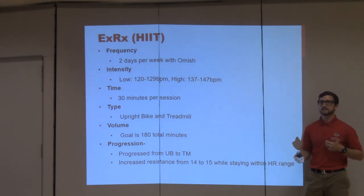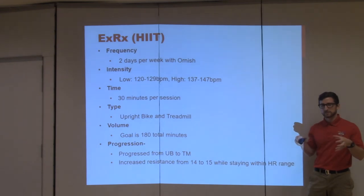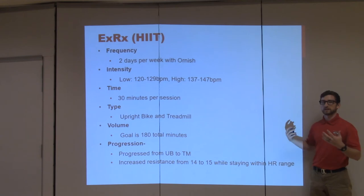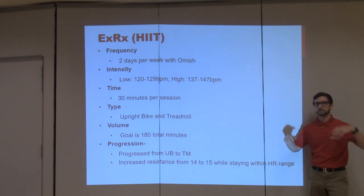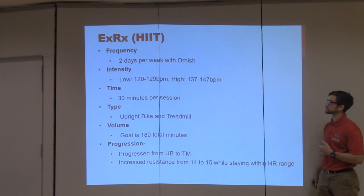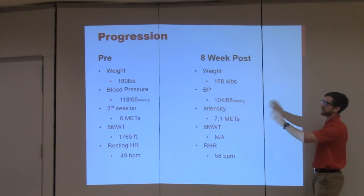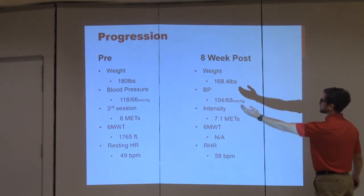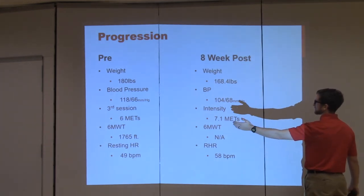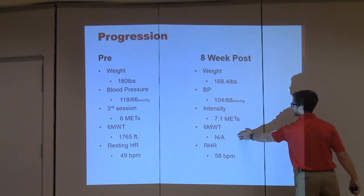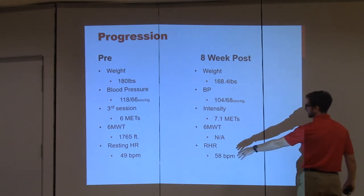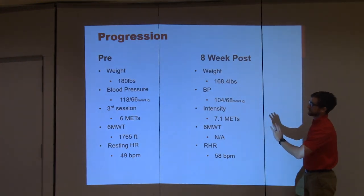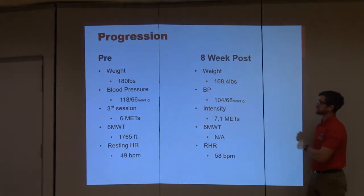The body is adapting and building those collateral vessels. By doing this, he can do more — he can exercise at a greater capacity without developing angina. In terms of progression, he came in at 180 pounds with blood pressure of 118 over 66. As you can see, his weight drops, his blood pressure drops, his METs increase. His six-minute walk we didn't do post, but his heart rate comes up a little bit — still bradycardic. Just awesome. He's doing really, really well.